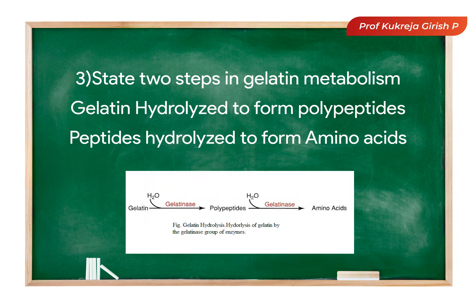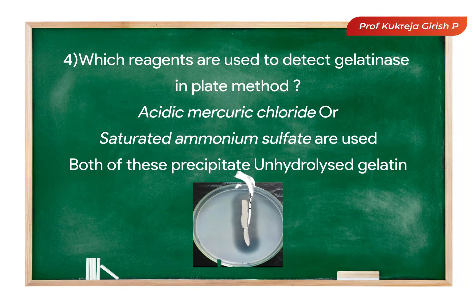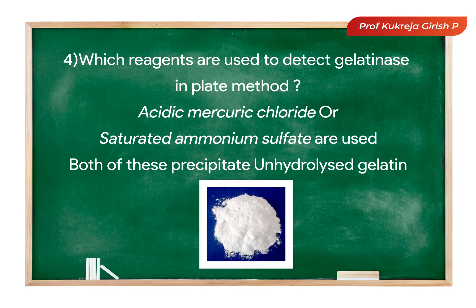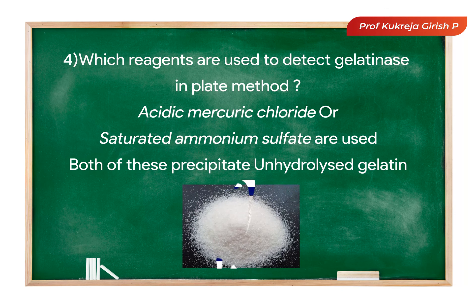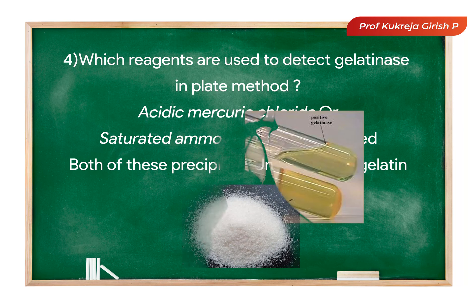What are the two steps in gelatin metabolism? Gelatin is first hydrolyzed to form polypeptides, which are further hydrolyzed to form amino acids. The acidic mercury chloride and the saturated ammonium sulphate are used to detect gelatin hydrolysis in the plate method, because these precipitate the unhydrolyzed gelatin.